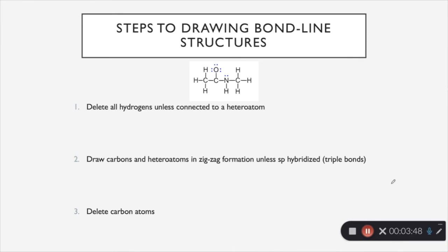So here are the steps to drawing bond line structures. The first step is that we are going to delete all hydrogens unless it's connected to a heteroatom. And a heteroatom is going to be any atom that is not a carbon. So this oxygen right here and this nitrogen right here are the heteroatoms of this molecule. So I went ahead and did that and deleted all of the hydrogens except for this one connected to the nitrogen.